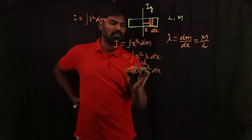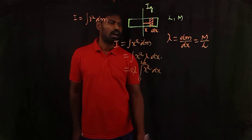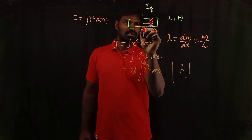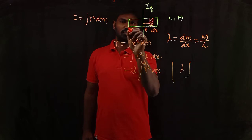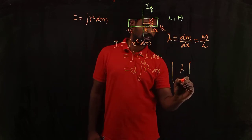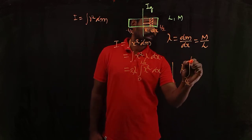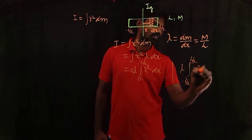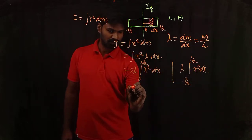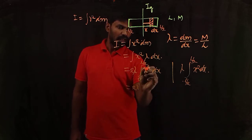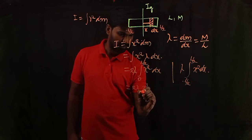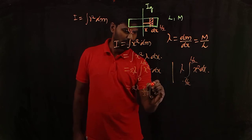Since the right side and left side are symmetric, I multiply by 2. Alternatively, you can write it as lambda times the integral from minus L/2 to plus L/2 of x² dx. Whether you carry out the integration either way, you get the same answer. That gives 2 lambda times the integral from 0 to L/2 of x² dx, which equals 2 lambda times x³/3 evaluated between 0 and L/2.